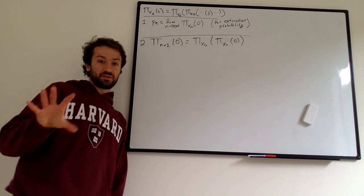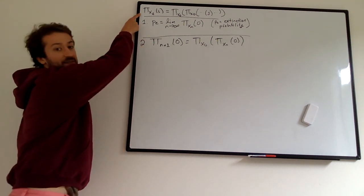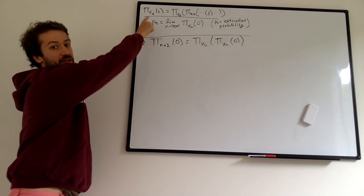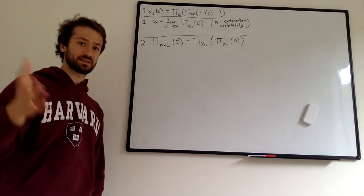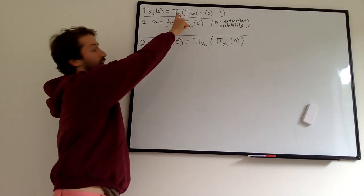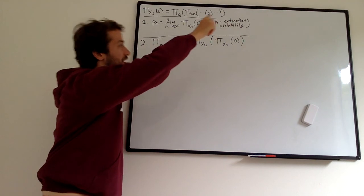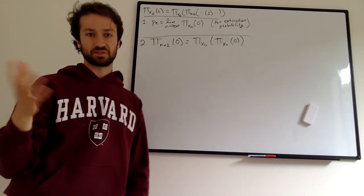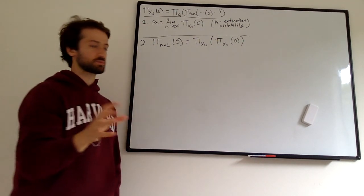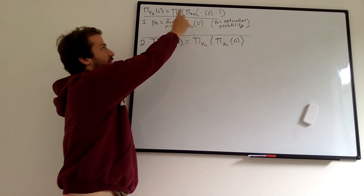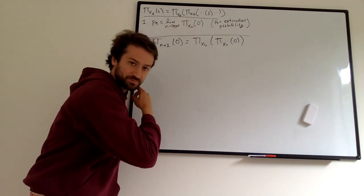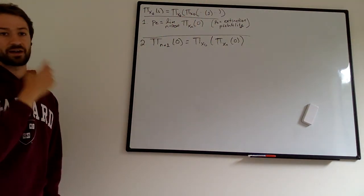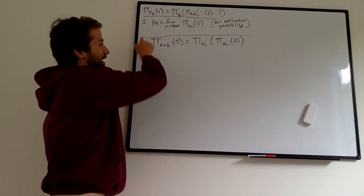We're going to use a couple of key facts today. One fact is this fact which we've proven in the previous video: the PGF of X sub T, which is the branching process X at time T, is equal to the PGF of PGF of PGF of X sub 0 — the offspring distribution — composed T times. X sub 0 is the offspring distribution; each cell has its offspring distribution. That's the fact we proved in the previous video, and we're going to prove two more facts now.